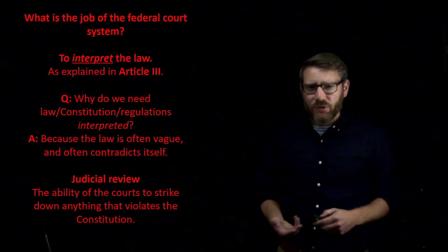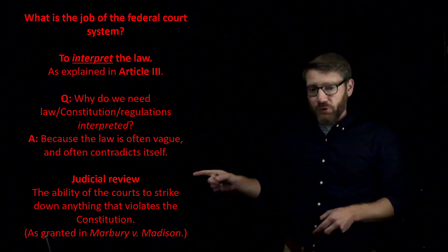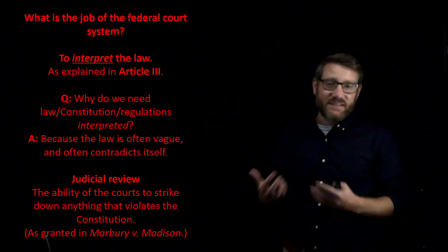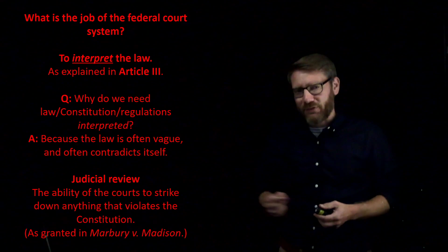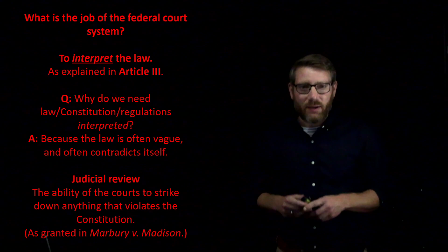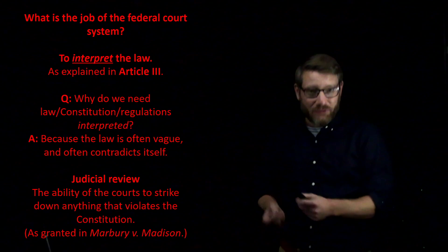Judicial review was established in a really old court case called Marbury v. Madison. Oddly enough, the most powerful thing courts have is not in the Constitution — the courts simply ruled that they had that power. John Marshall wrote the opinion in Marbury v. Madison, a case from the late 1700s, and essentially the courts gave themselves the power of judicial review.